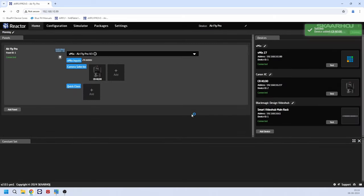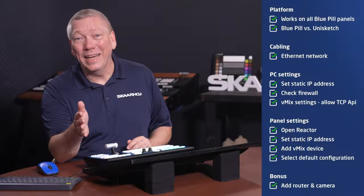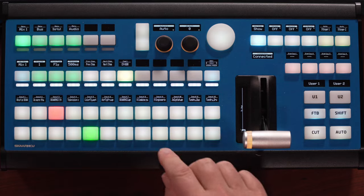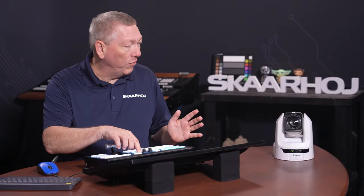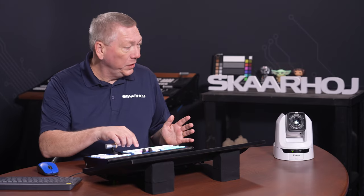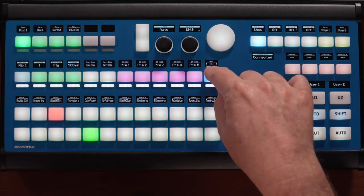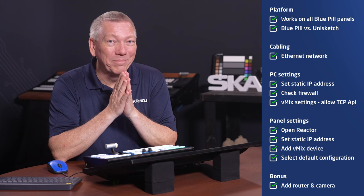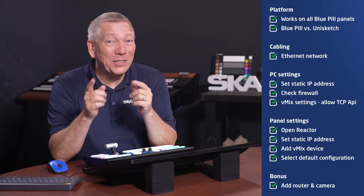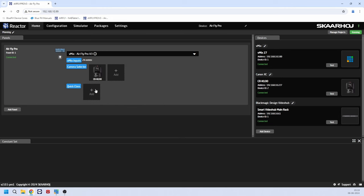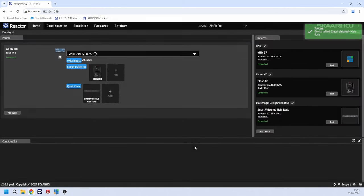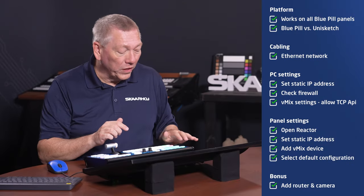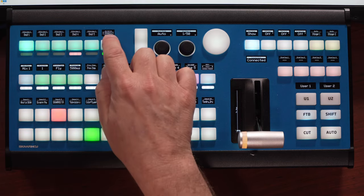Let's have a look. On the panel, I open the Camera Control section, select the Canon, and I now have full control of movement, presets, and many other parameters. And notice, I could have many more cameras added next to it. Let's do the same for the Video Hub. In the Quick class, I click Add and select the Video Hub. Now I can access it on the six topmost buttons and do routing with ease.